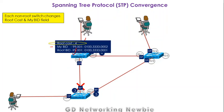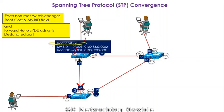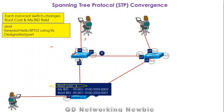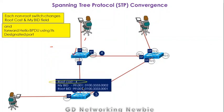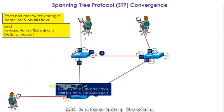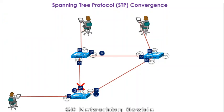After changing those two fields, the non-root switch forwards the hello BPDU to other switches connected on its designated ports. Importantly, switch three has a port in the blocking state, so it will not forward or receive data frames, but it will still receive hello BPDUs from its neighbor switch. So switch three receives hello BPDUs from switch two. This is the normal operation when everything is working fine and the network is in a stable state.